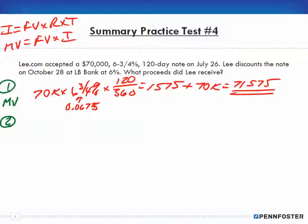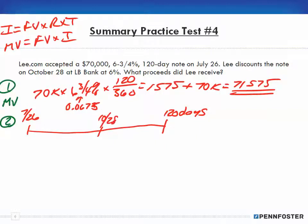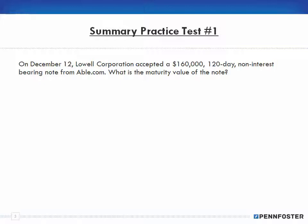Number two, we need the discount period. We started on July 26th, and this goes for 120 days. But on October 28th, it's going to be discounted. So we need to know how many days for this period in order to know how many days have elapsed so we can figure out the discount period.